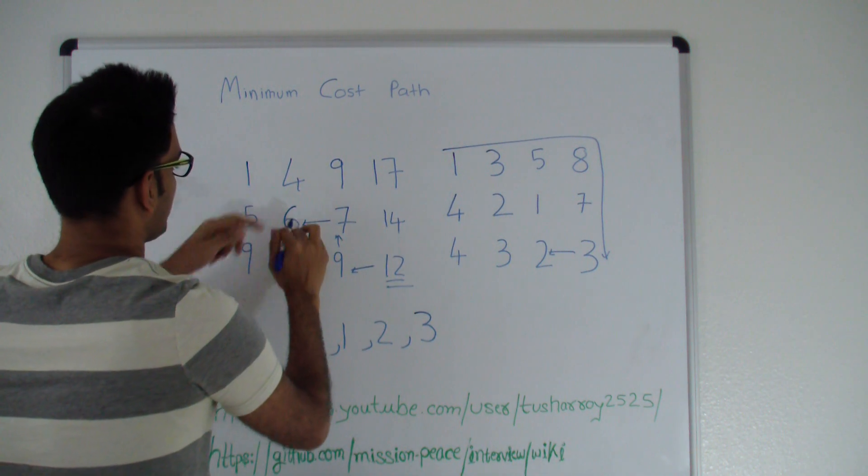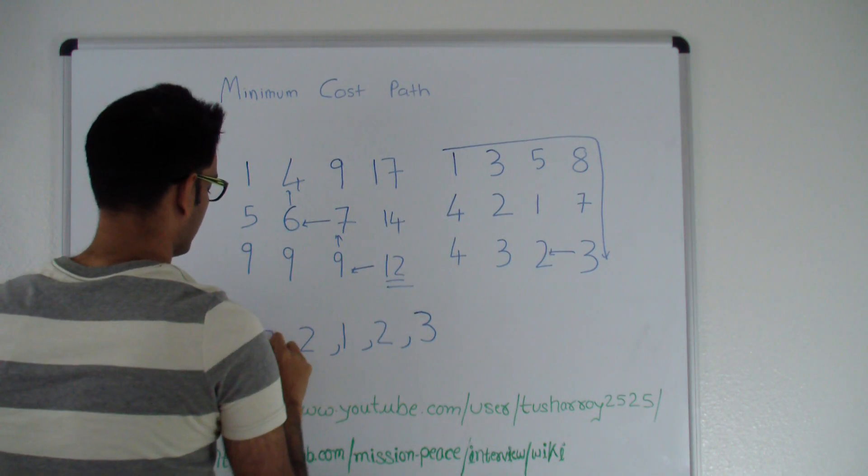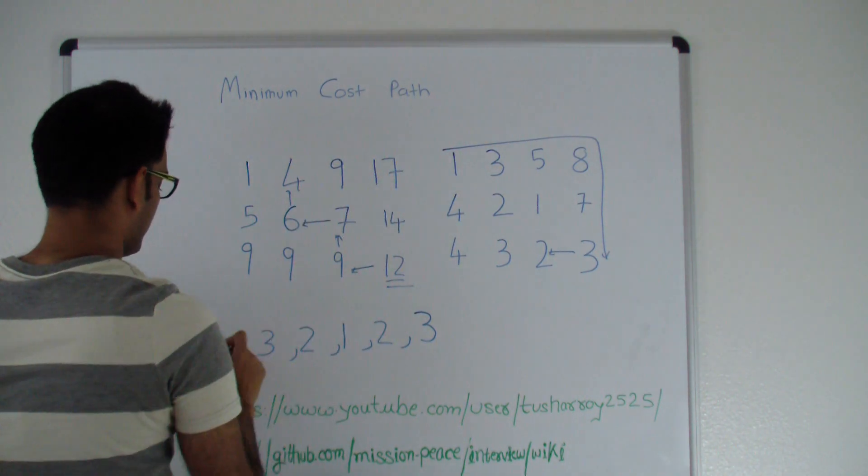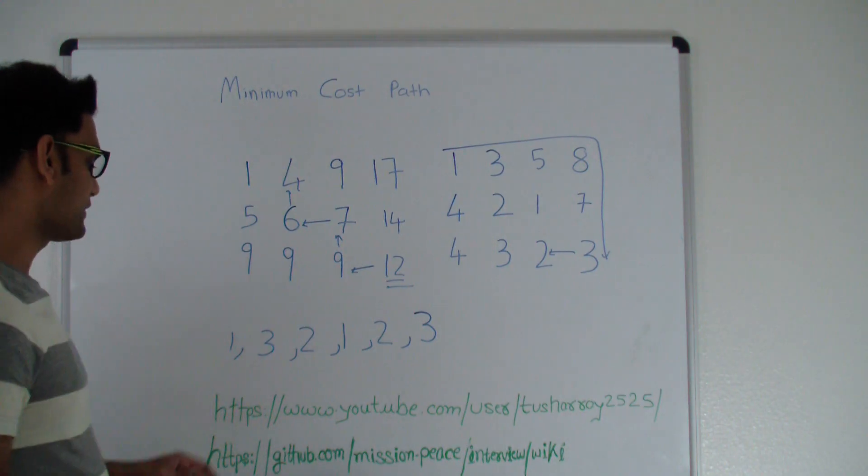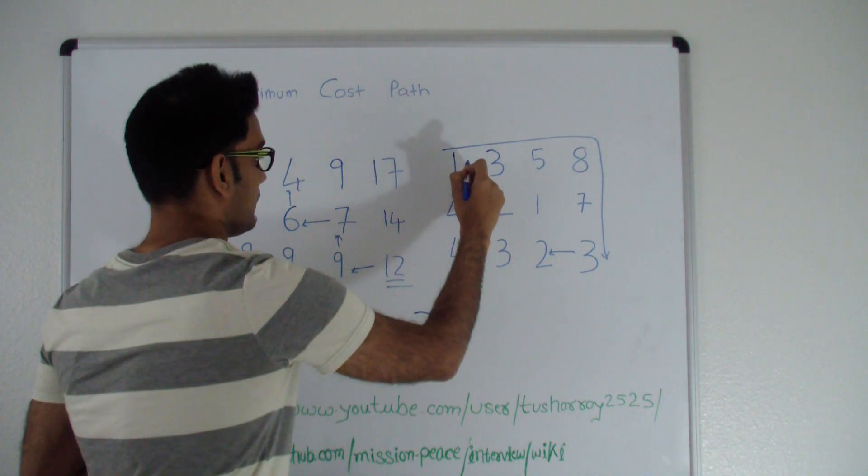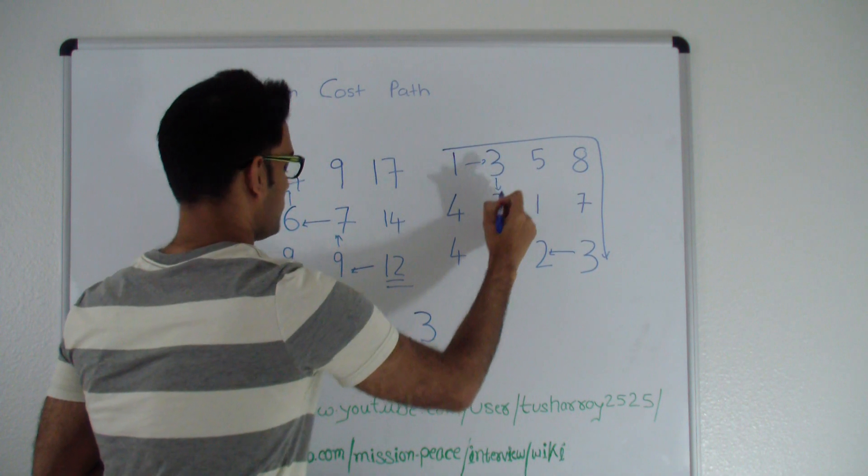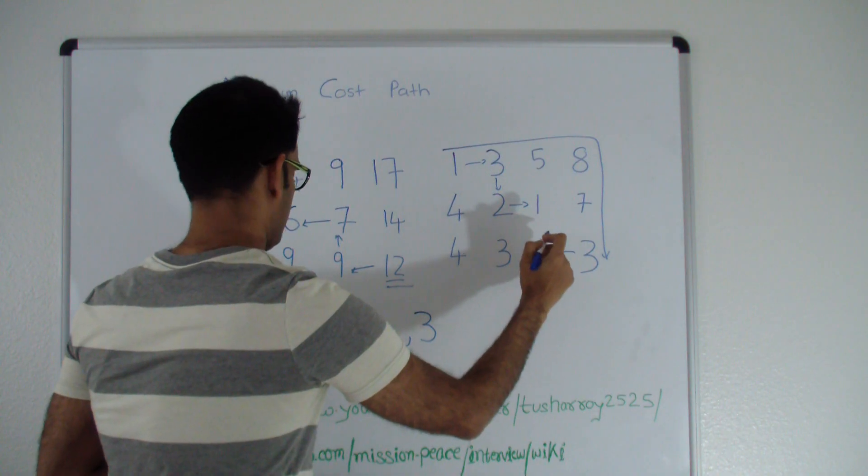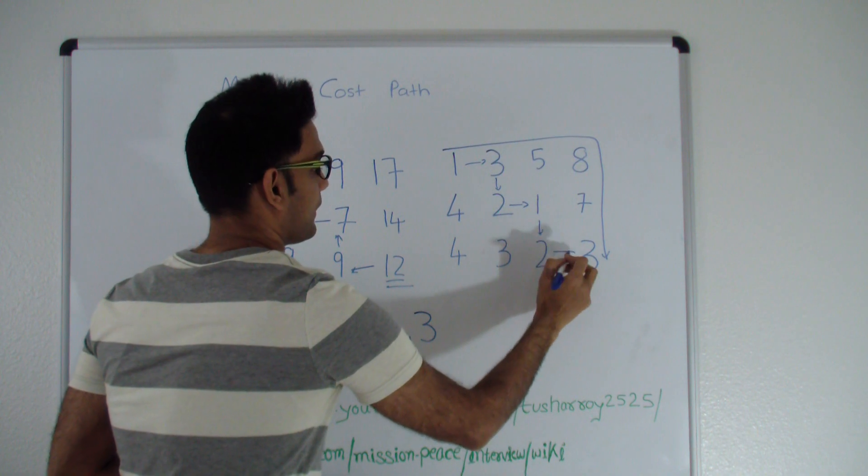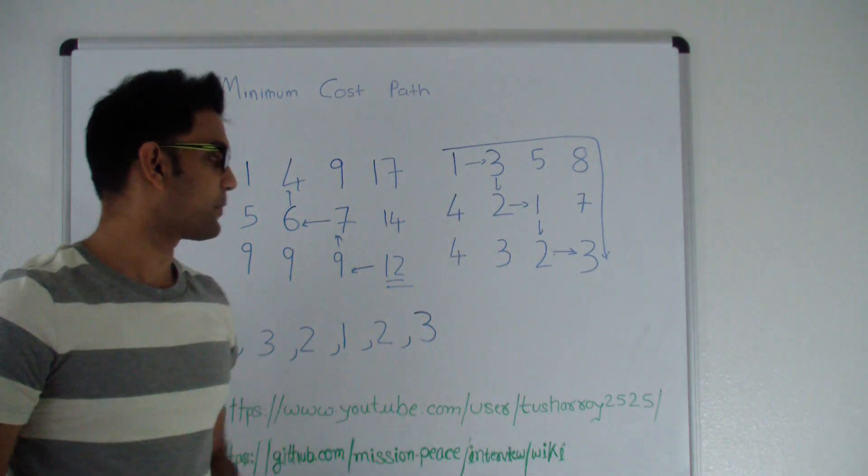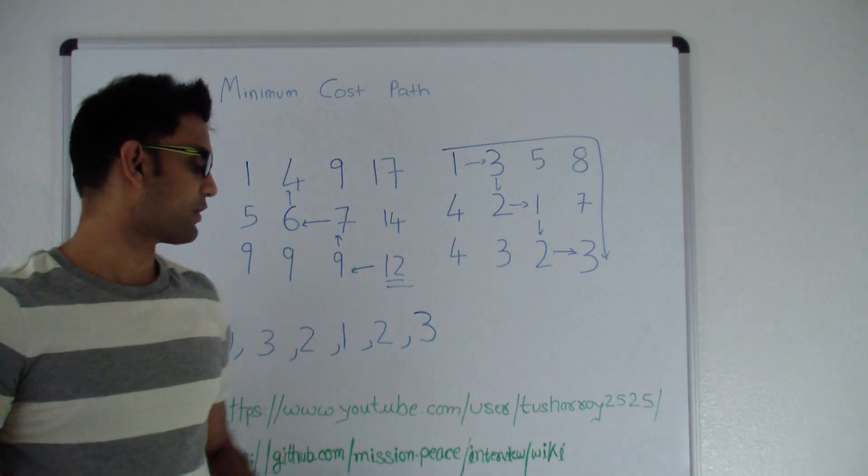Where is the 6 coming from? It's coming from the top. So the path will be 1, 3, 2, 1, 2 and 3. This is the minimum cost path to go from top left to bottom right. Let's quickly look at the formula.